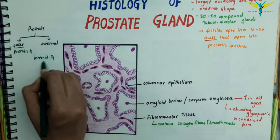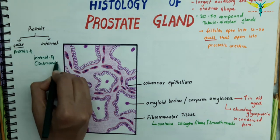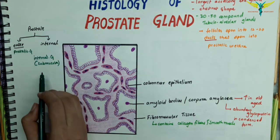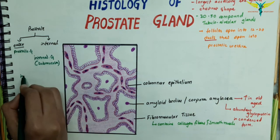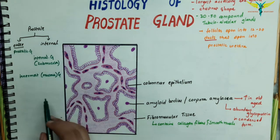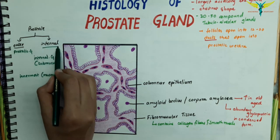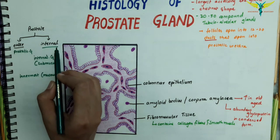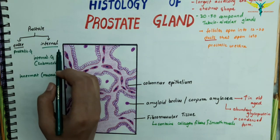The internal or submucosal glands have short ducts. The innermost or mucous glands open directly into the urethra. The internal and innermost zones together form the central zone.